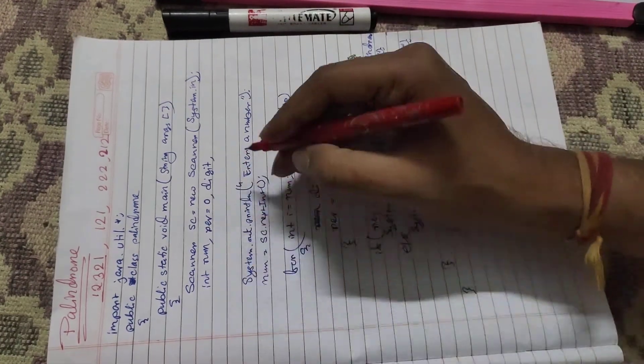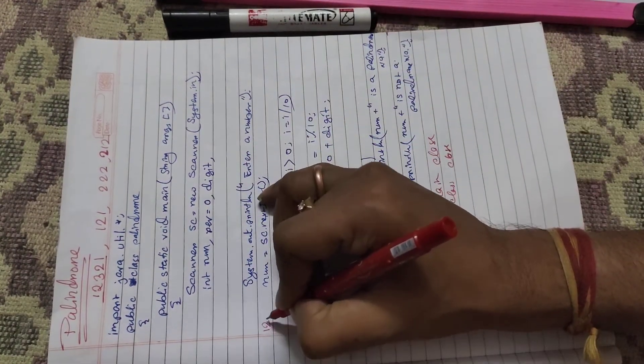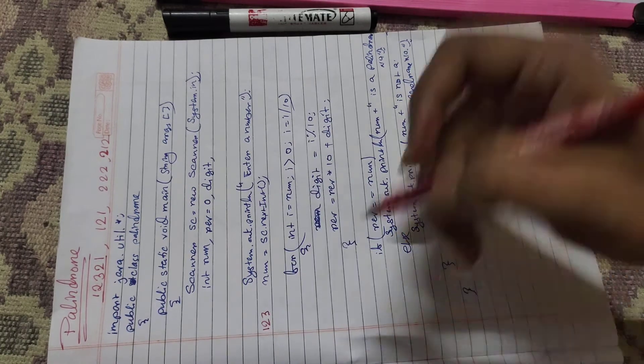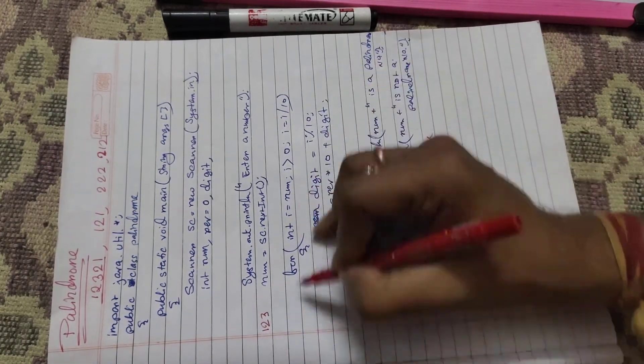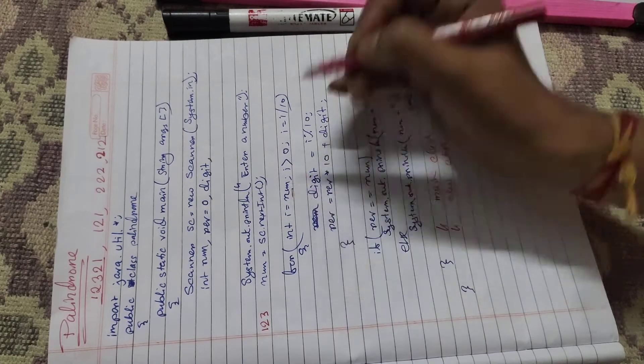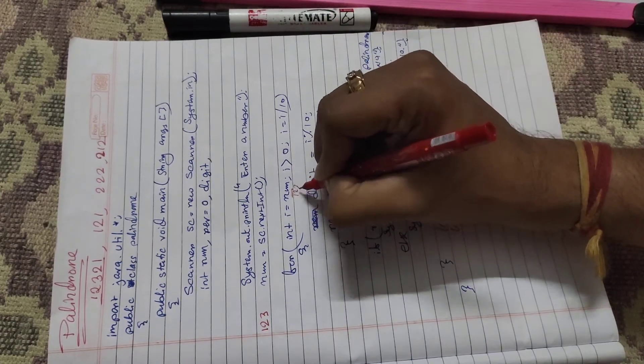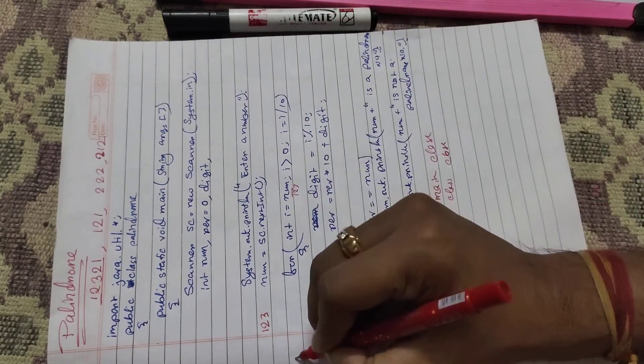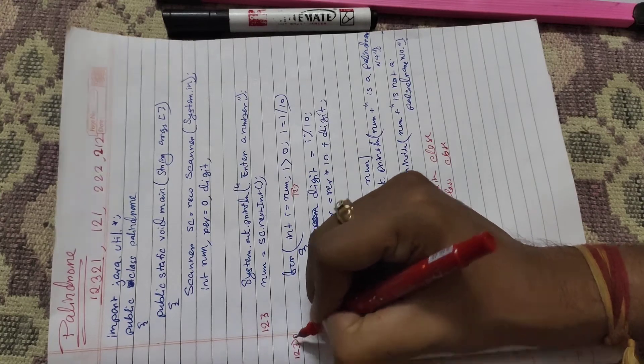If we write a number 123, then first i equals 123. Here i equals 123. Now in the condition part, 123 greater than zero - yes.